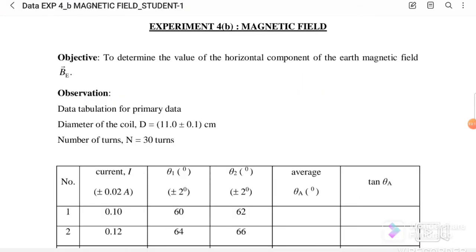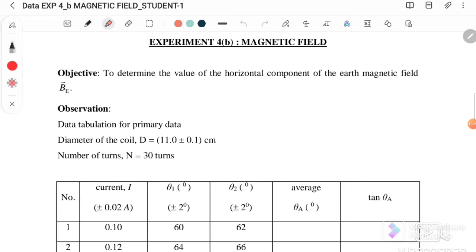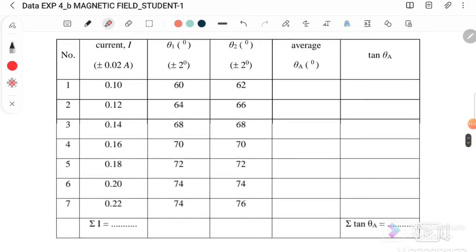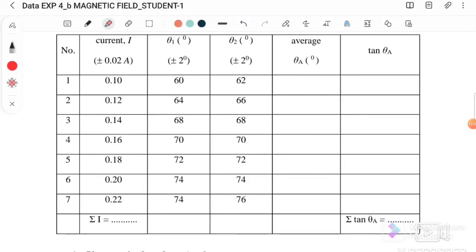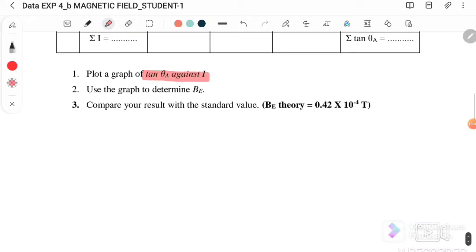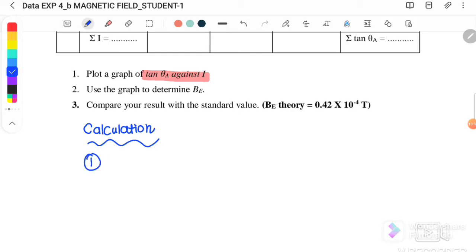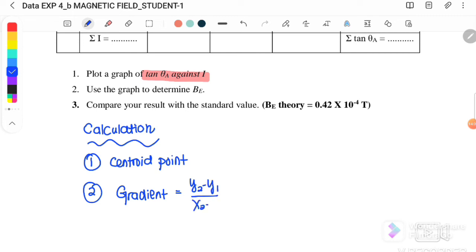The objective is to determine the horizontal component of Earth's magnetic field. The given values are: diameter D = 11 ± 0.1 cm, and number of turns N = 30. You need to plot a graph of tan θ against I (current). For the calculation part, step one is to find the centroid, and step two is to find the gradient using (y₂ − y₁) / (x₂ − x₁).